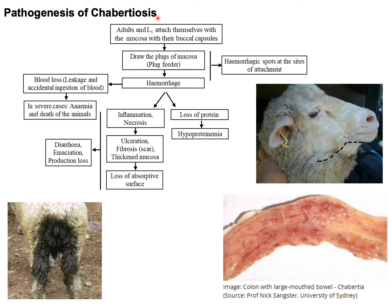In the pathogenesis of Chabertia ovina infection in sheep, goat, and other ruminants, the adults and young adults — L5 — attach themselves to the mucosa using their well-developed buccal capsule. They draw plugs of mucosa from the intestine and are considered blood feeders. As a result, there is hemorrhage and blood loss due to leakage of blood and accidental ingestion of blood by the parasite. In severe cases, there will be anemia, and in some cases the animal may die due to intestinal hemorrhage. There is also loss of protein, leading to hypoproteinemia.